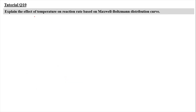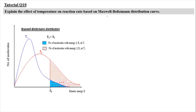For question 10, we have to explain the effect of temperature on reaction rate based on the Maxwell-Boltzmann distribution curve. The curve you will need to draw here is the Maxwell-Boltzmann distribution curve as explained in the last video of 1.3.